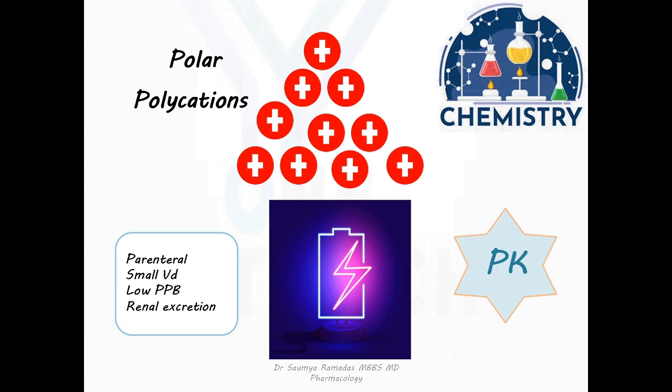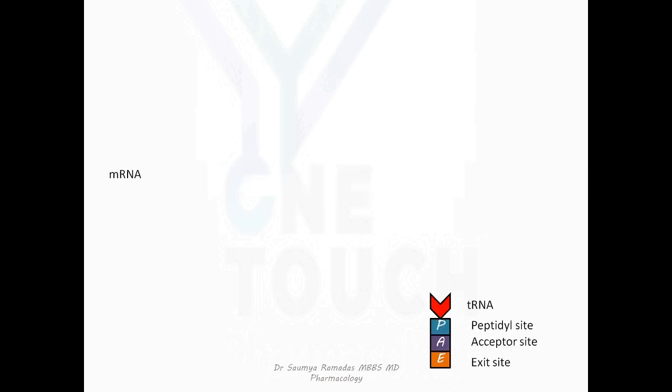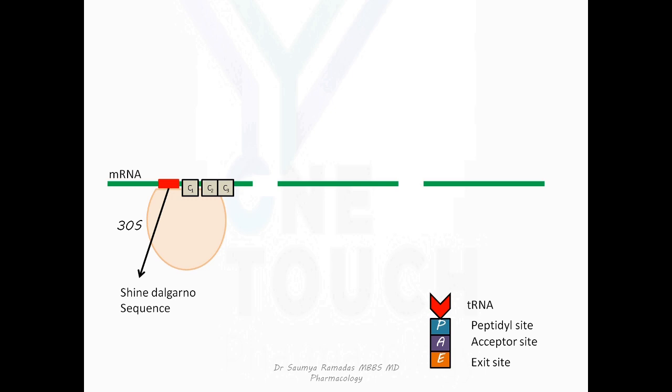They have very less plasma protein binding and being polar, they are exclusively excreted by the kidneys by glomerular filtration. Let's try to understand bacterial protein synthesis before we delve into the mechanism of action of aminoglycosides. This is the messenger RNA of the bacteria. I have drawn three codons here just for representative purpose, C1, C2, and C3. C1 is the start codon. This is the Shine-Dalgarno sequence which is upstream of the start codon C1. The bacterial 30S ribosome identifies the Shine-Dalgarno sequence and attaches to the messenger RNA in such a way that the start codon C1 is in the right position in the bacterial ribosome for protein synthesis.